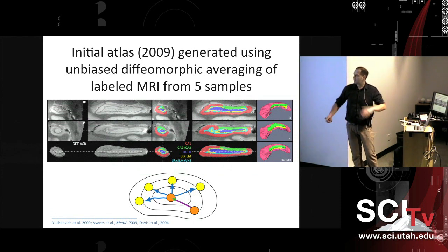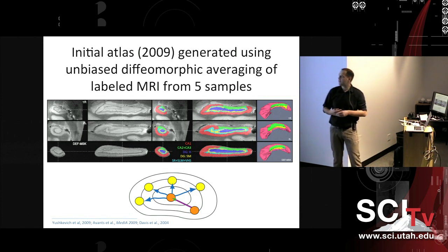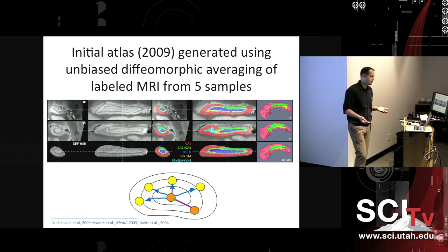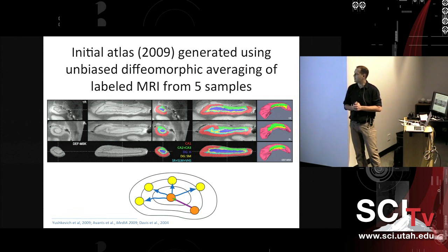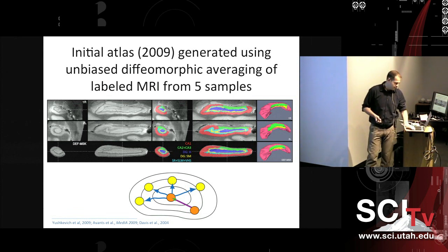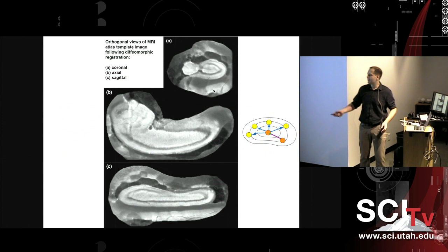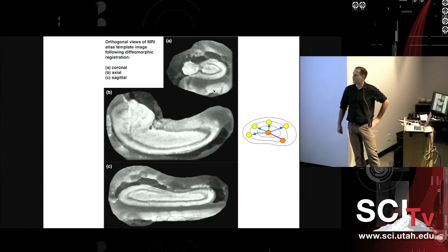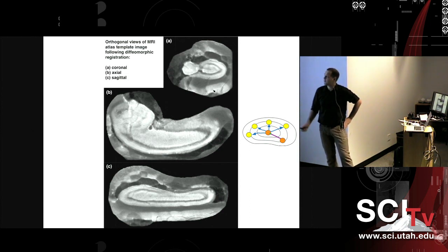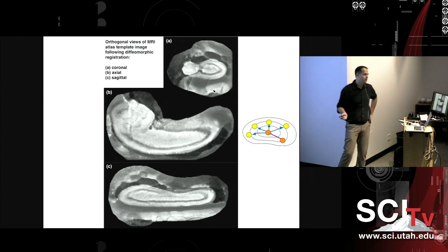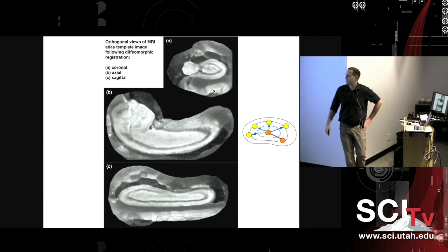Once we have these images and segmentations, we can put them together into an atlas and do the kind of computational anatomy work that Sarang and his colleagues have really pioneered. Here's our more recent atlas — this is from averaging about 15 out of the 25 samples we have scanned, diffeomorphically averaged into this atlas.